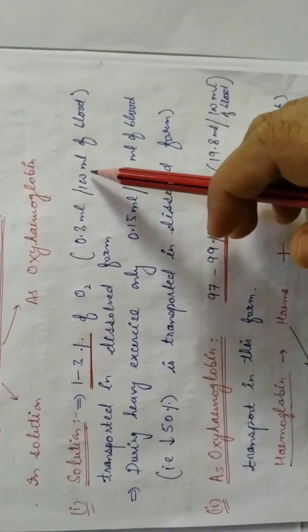अगर 1 to 3% oxygen solution form में transport हो रही है, तो 97 to 99% oxygen as oxyhemoglobin transport होती है। 100 ml blood में 0.3 ml dissolved form में जाती है जबकि 19.8 ml of oxygen is transported in the bound form as oxyhemoglobin. So 19.8 ml per 100 ml of blood is transferred as oxyhemoglobin.